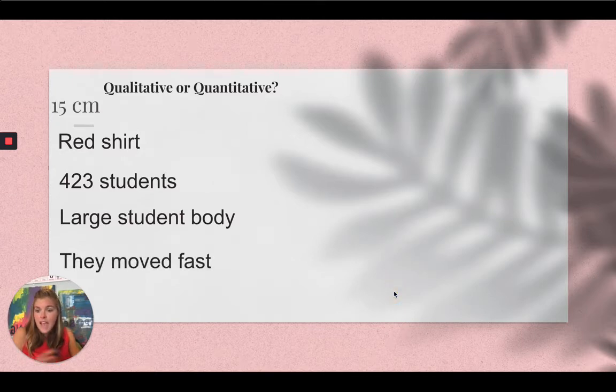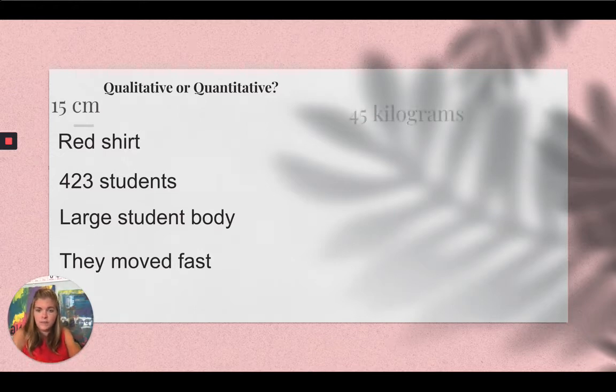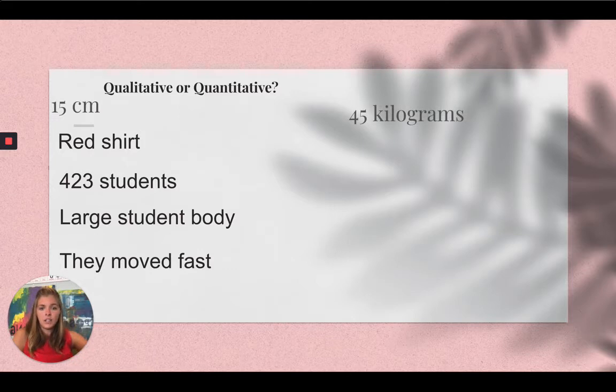They moved fast. How fast? We don't know, so it's qualitative. It's a generalization. 45 kilograms. 45 is a number, it's quantitative. 13.3 degrees Celsius. Number, it's a temperature, it's quantitative.